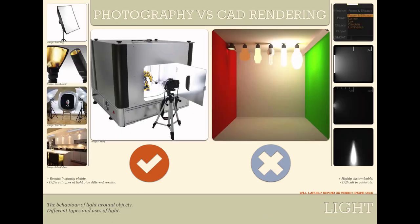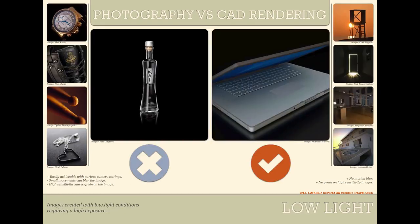Next was light — similar to accuracy but focusing purely on how light behaves, not color or contrast. As good as some CAD rendering engines get, they are still not up to scratch in how light behaves; otherwise they would be the undisputed kings. Photography won easily. Next was low light, considered because it is sometimes essential to use low lighting conditions for products. In low light conditions, CAD rendering performed better — you don't get any high ISO grain, you don't get any motion blur — and it won this category.